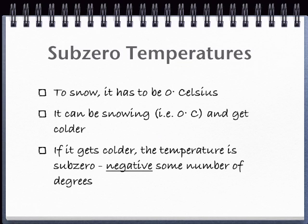One place where you might have run into negative numbers before is with temperatures. In order for it to snow, it has to be 32 degrees Fahrenheit. You may have also heard that 32 degrees Fahrenheit is the same as zero degrees Celsius. So in order to snow, it has to be zero degrees Celsius.